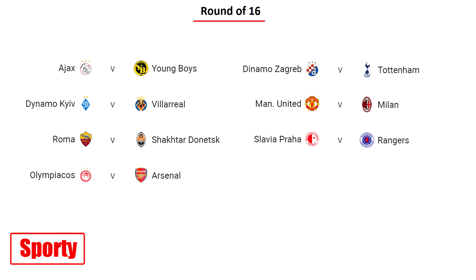Slavia Rangers, Granada Molde. The first games on March 11, the second leg on 18 March.